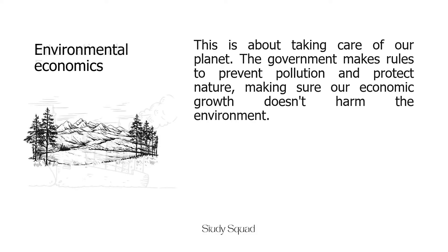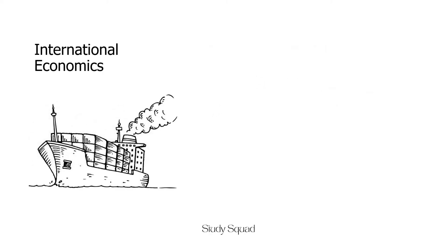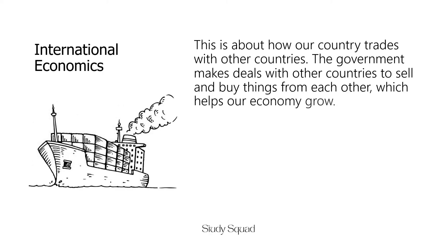Environmental economics is next. This is about taking care of our planet. The government makes rules to prevent pollution and protect nature, making sure our economic growth doesn't harm the environment. Lastly, there's international economics. This is about how our country trades with other countries. The government makes deals with other countries to sell and buy things from each other, which helps our economy grow. These are the big decisions governments need to think about in macroeconomics, and each of these areas helps our country and our lives to be better.